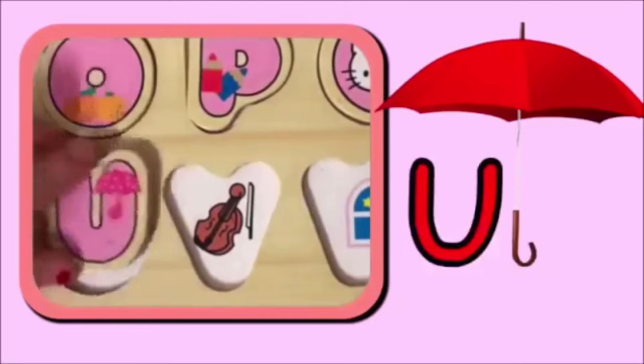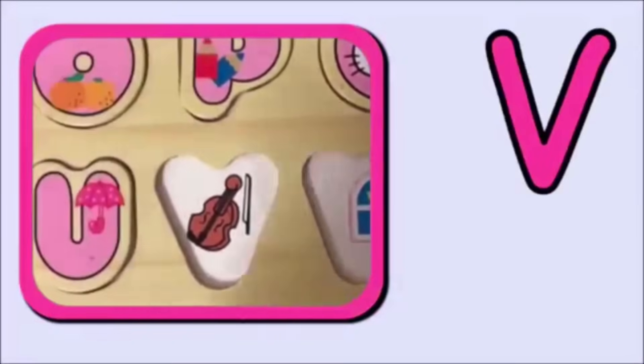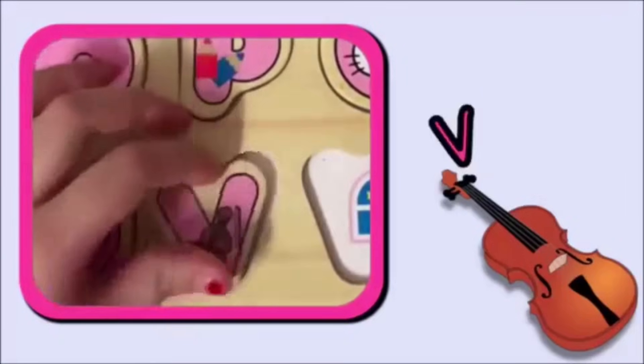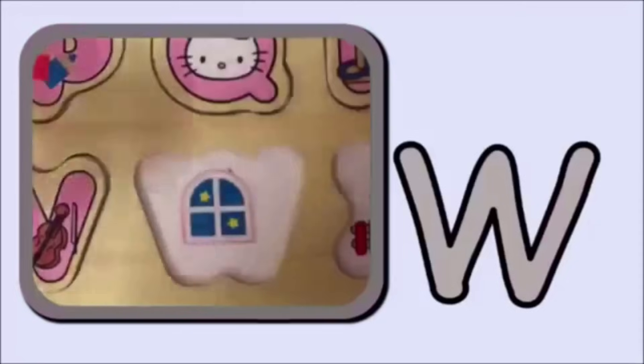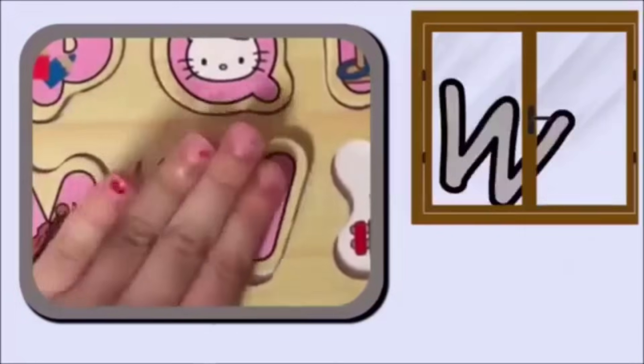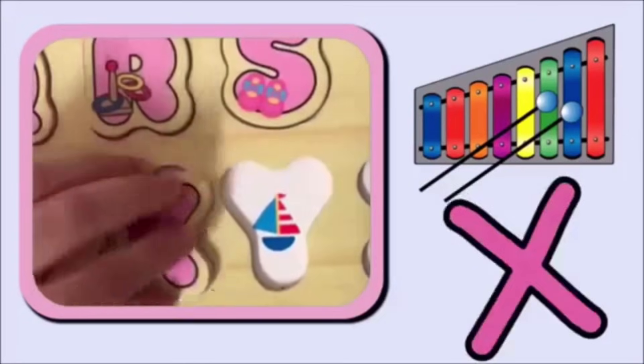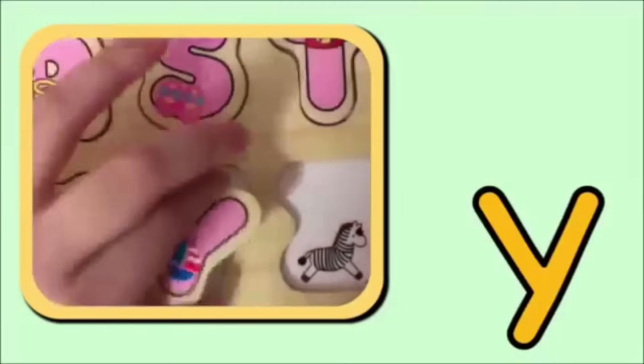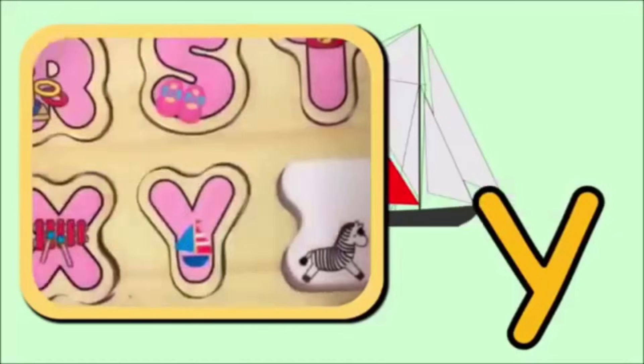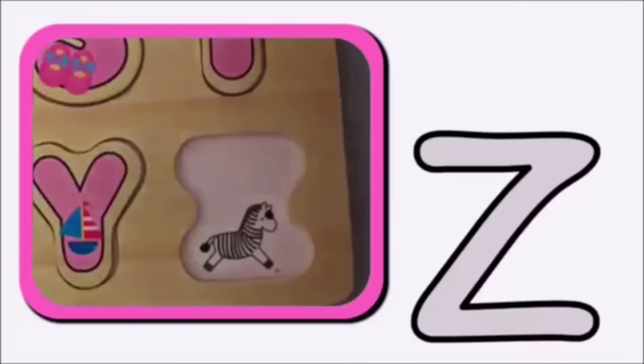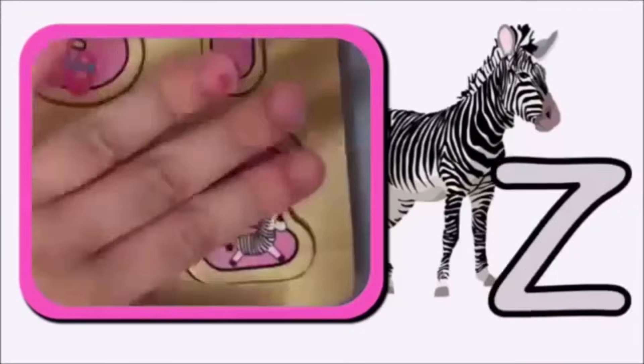U is for Umbrella, ah. V is for Violin, v. W is for Window, w. X is for Xylophone, k. Y is for Yacht, y. Z is for Zebra, z.